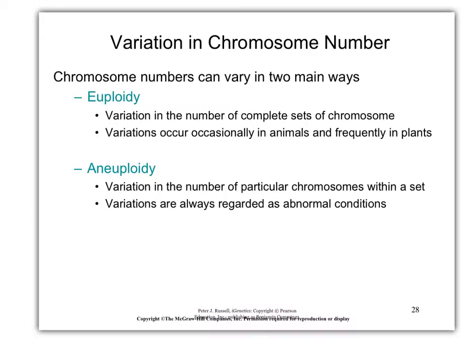The last part of this chapter we're going to talk about is euploidy and aneuploidy — when the total chromosome number varies. Thus far, we've talked about changes in chromosome structure: deletions, insertions, inversions, translocations. That changes chromosome structure.